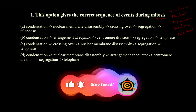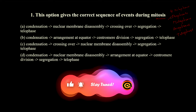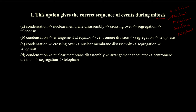In prophase there will be condensation of chromosomes and disappearance of nuclear membrane. In metaphase all chromosomes will be standing at the equatorial plate. In anaphase all chromosomes will get separated. And finally in telophase it will get separated and there will be the appearance of the nuclear membrane.